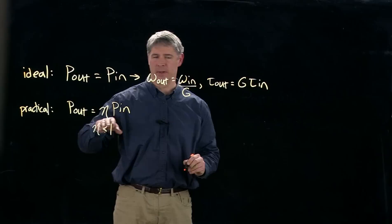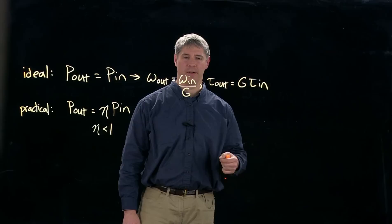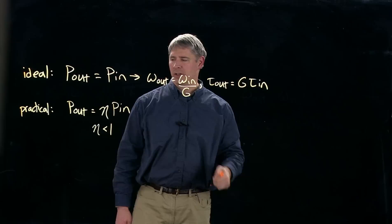If eta is equal to 1, then we have the ideal case, but typically it's less than 1. Now, the teeth themselves satisfy or enforce the kinematic relationship that the output velocity has to be the input velocity divided by g. But we don't have anything that enforces this relationship for torque.